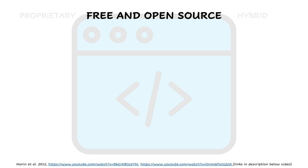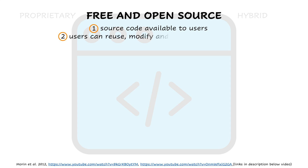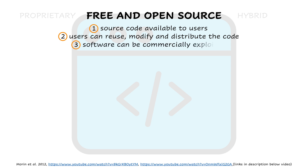There are several free and open source licenses, but all of them share three basic ideas. One, the source code has to be available to users. Two, users can reuse, modify, and redistribute the code. And three, free and open source does not mean non-commercial — in fact, software under these licenses can be used for commercial purposes.